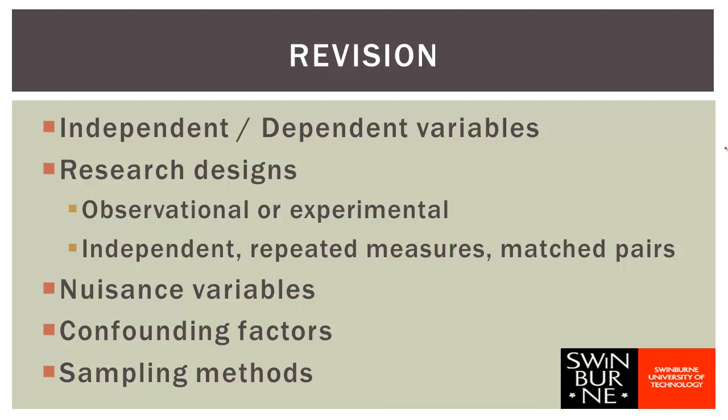We then looked at nuisance variables. A nuisance variable is one that is not the independent variable but is somehow correlated to the dependent variable. When designing our study, we want to ensure we're seeing the effect of the independent variable and not the nuisance variable. The confounding factor is correlated to both the independent variable and the dependent variable, so we can't tell whether the effect is from the independent variable or the confounding factor.